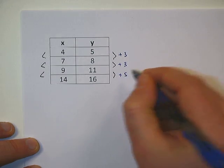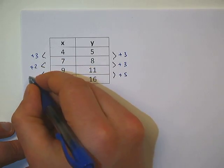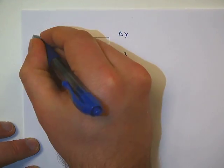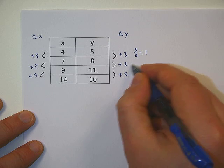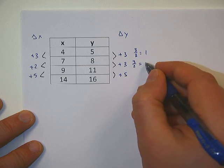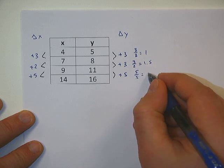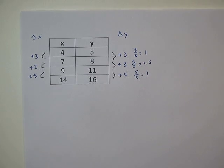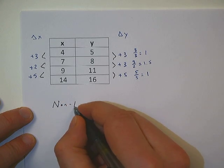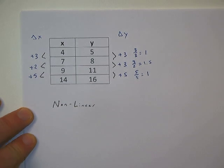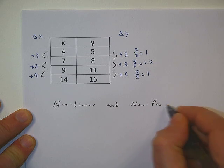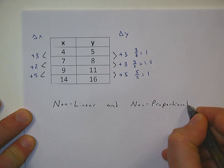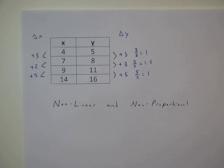We're going to start with the caret method. So we added 3, we added 3, we added 5. We added 3, added 2, added 5. That's our change in y, change in x. We find our ratio, 3 over 3 equals 1. Then we have 3 over 2 which equals 1.5. And then we have 5 over 5 which equals 1. So 1, 1.5, 1, we do not have a constant rate of change. So it's non-linear. And because the first stipulation of being proportional or not is it has to be linear, it's non-linear and non-proportional. It cannot be proportional without being linear.